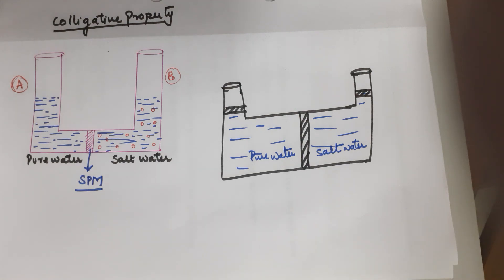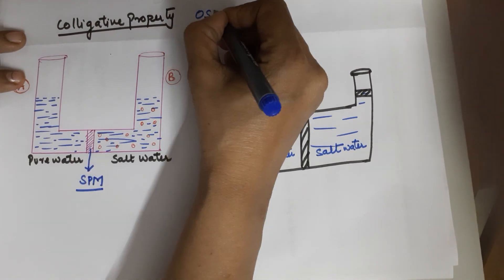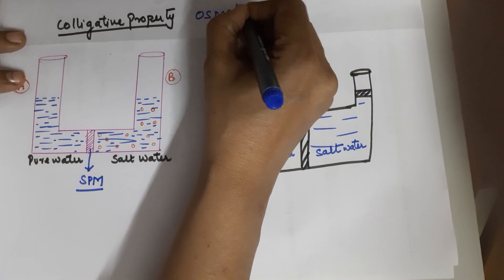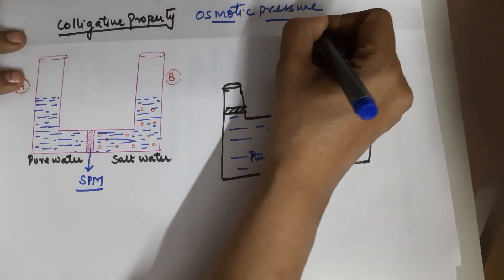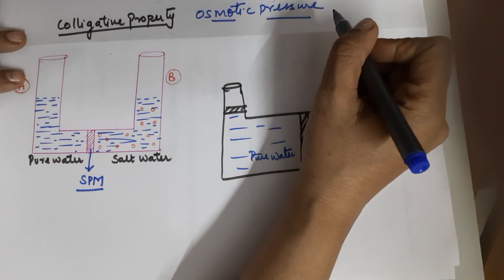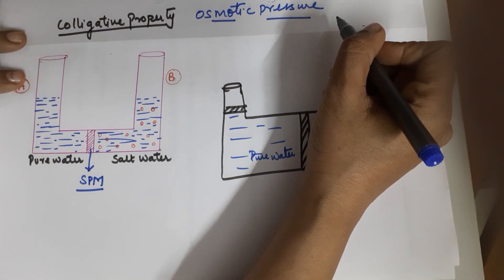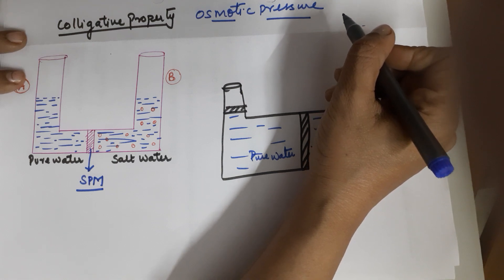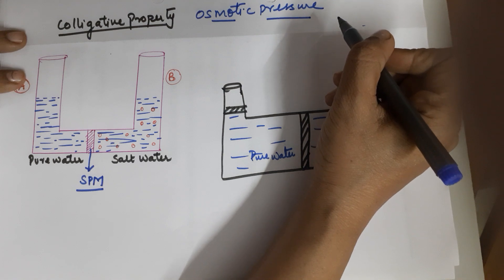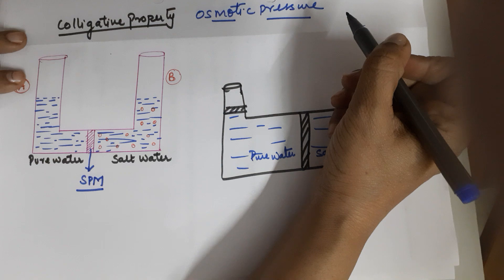Good morning students. In today's class I'll be talking about the next colligative property, which is osmotic pressure. Osmotic pressure is the pressure which is applied to stop osmosis — just to stop osmosis. I've already done a lecture before this on osmosis; you can have a look at it in case you are struggling with the topic.